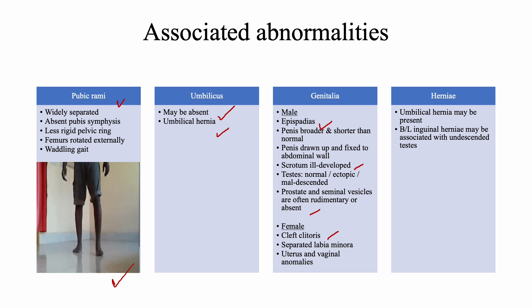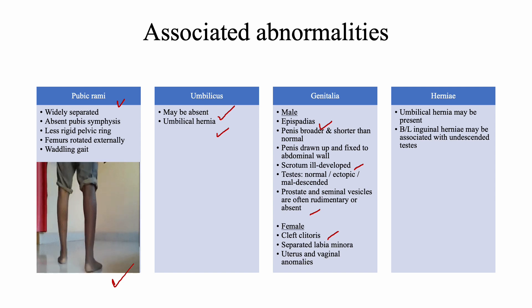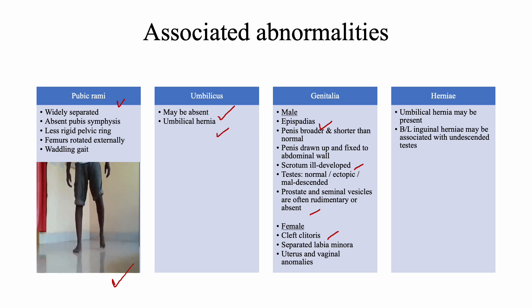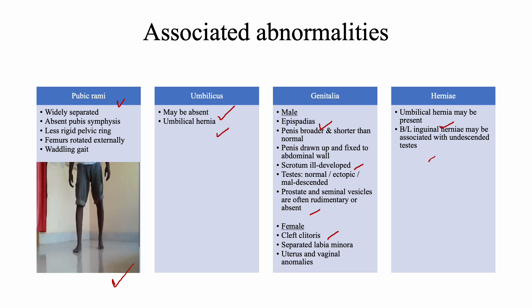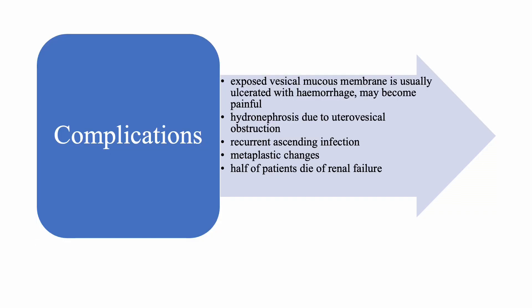In females, a cleft clitoris can be found, the labia minora are separated, and uterine and vaginal anomalies may also be present as associations with ectopia vesica. Regarding hernias, umbilical hernia may be present, and bilateral inguinal hernia may be associated with undescended testis.